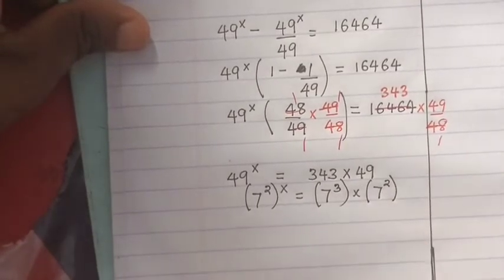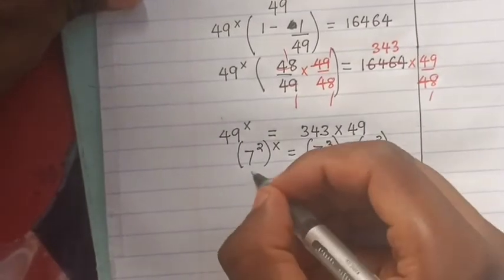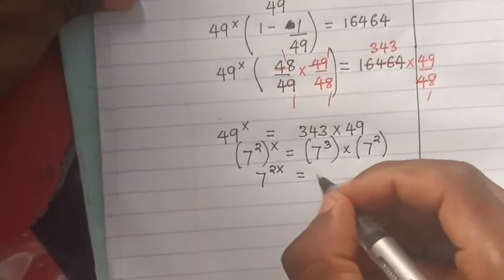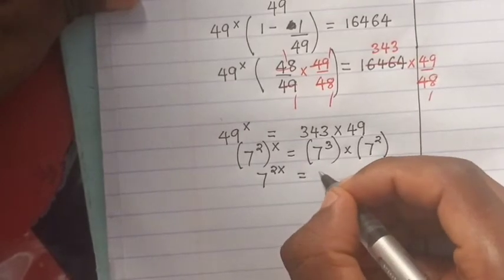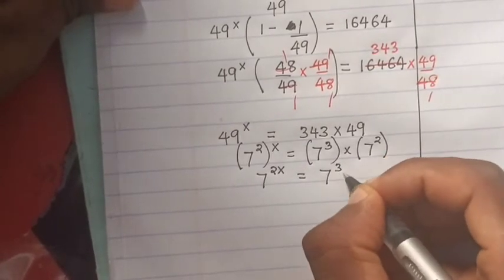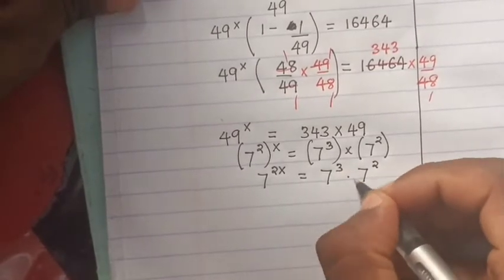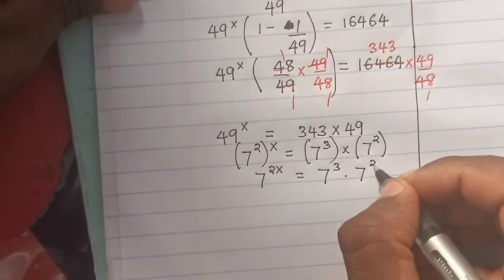So this will be 7^(2x) equals 7^3 times 7^2.